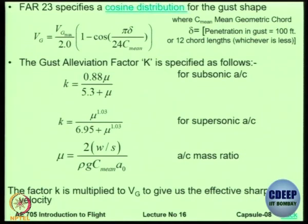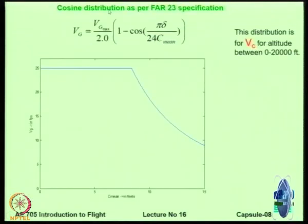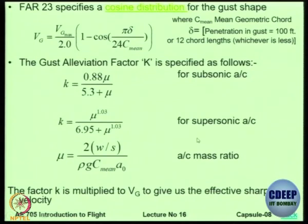If you look at FAR 23, their calculations or their assumptions show that the gust follows a cosine distribution that means when the distance is from 0 to 15 feet, the velocity is actually following some kind of a curve. VG is equal to VG max by 2 1 minus cos etcetera. They say that do not assume sharp gust, assume that the gust is going to be linear but these are details which we might like to skip.